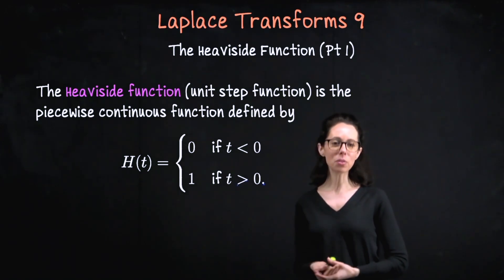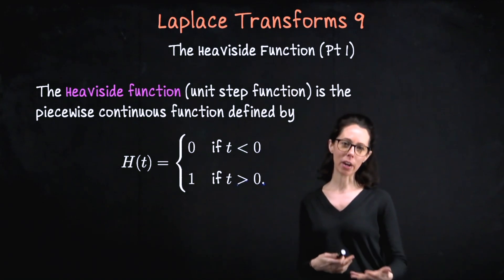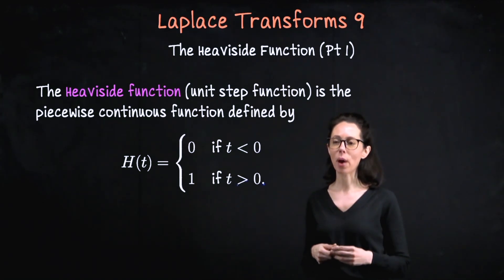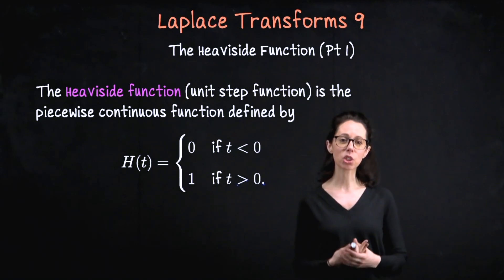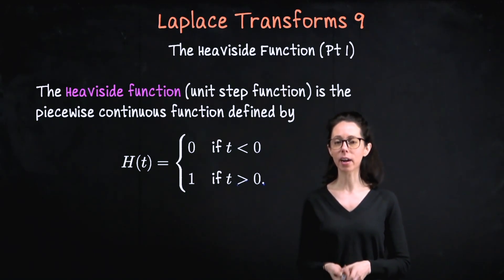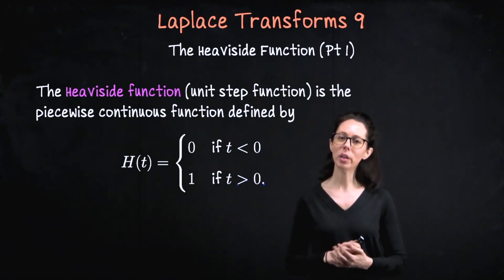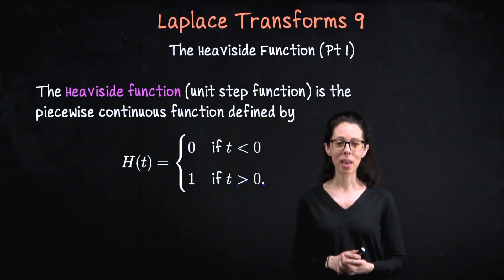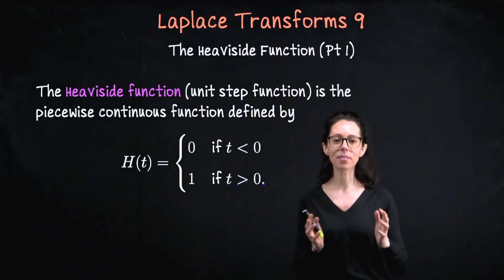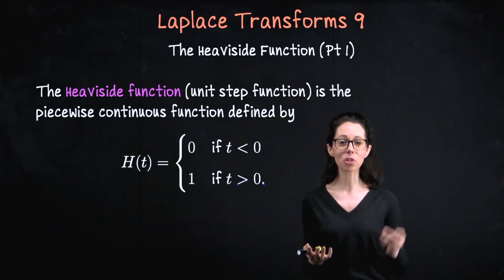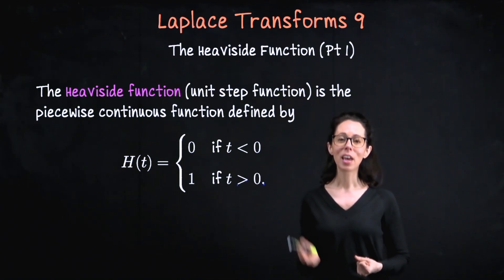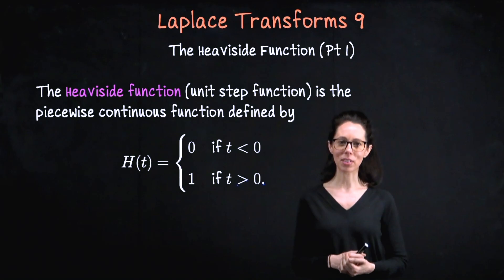What do we use this for? Well, that will become apparent as we work through examples, but the idea is imagine you have some kind of signal, like an external forcing function that you want to apply to a harmonic oscillator, but you don't want to apply it right from the start. Maybe you have some spring-mass system and for five seconds it's just following its natural motion, but when time equals five, you want to flip something on. You can do that with a Heaviside function.